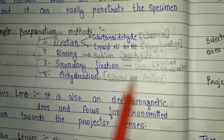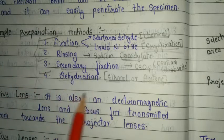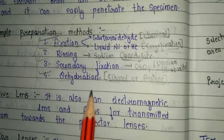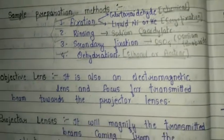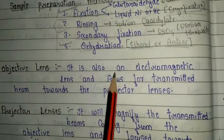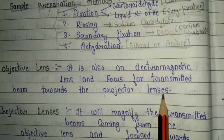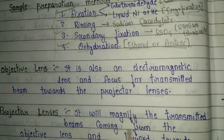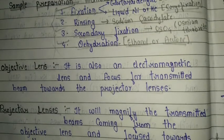Proper sample preparation is critical to obtaining a good image. The third key component is the objective lens, also an electromagnetic lens, which focuses the transmitted beam toward the projector lens. The projector lens then magnifies the transmitted beam coming from the objective lens and focuses it toward the fluorescence screen or CCD detector.